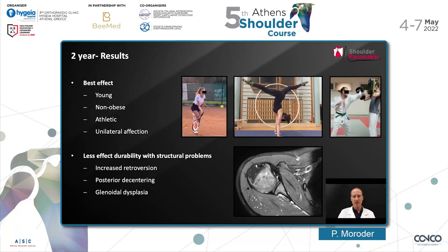We also analyzed what factors lead to a better outcome. The best effect is seen in young, non-obese, athletic patients with unilateral affection. We saw less effect durability with structural problems, such as increased retroversion, posterior glenoid dyscentering, and congenital glenoid dysplasia.